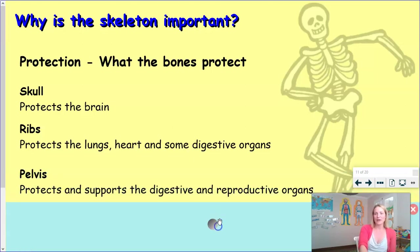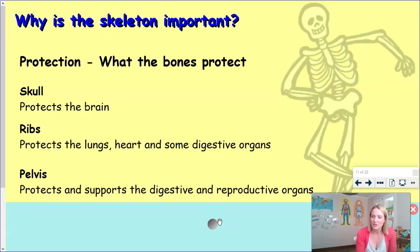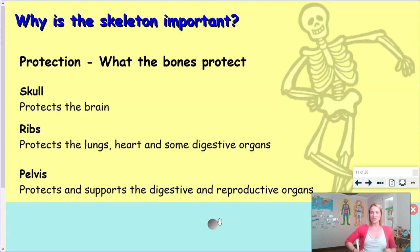Your pelvis — the scientific term for your hips — protects some of your digestive organs, such as your intestines, your small and large intestines, and also your reproductive organs. That's really important: if you think of a pregnant lady carrying a baby, her hips give her support and protect the baby that is developing.